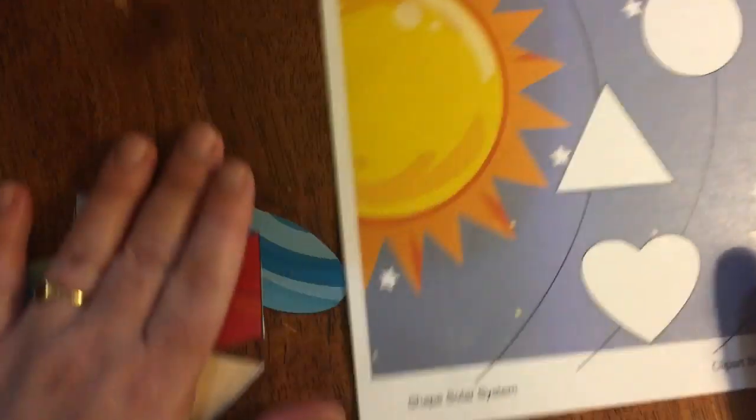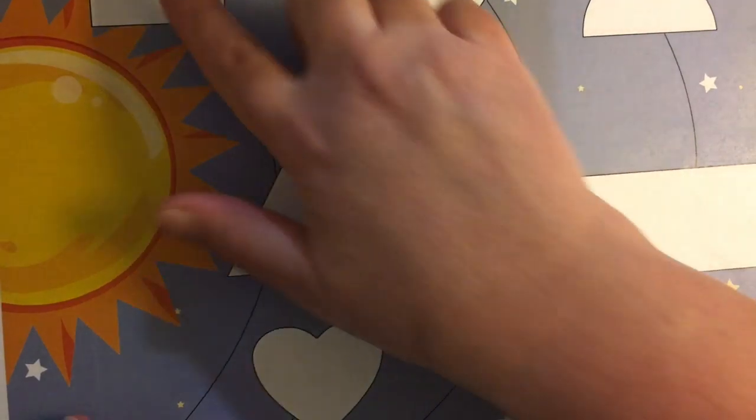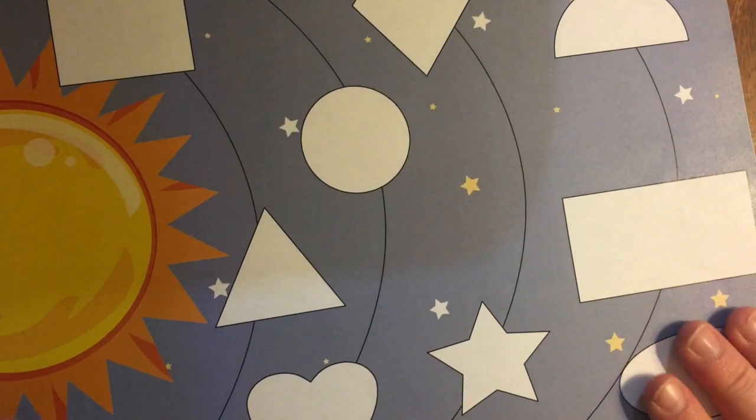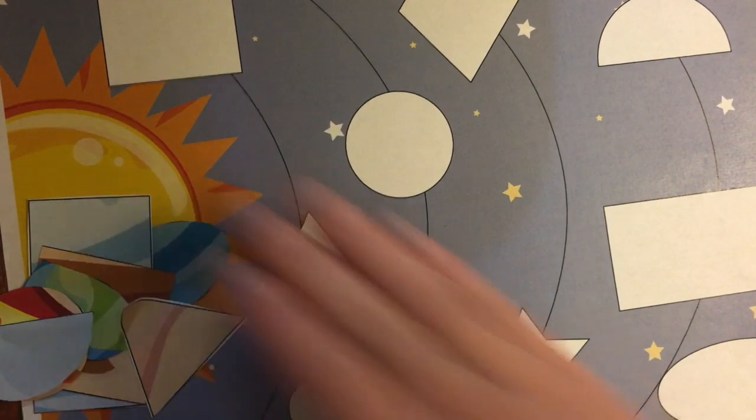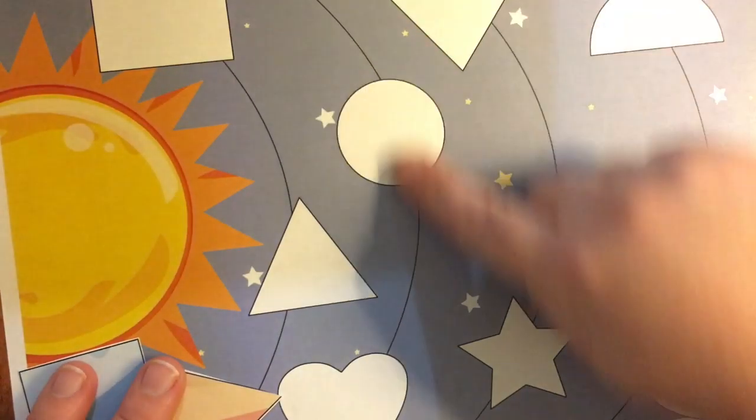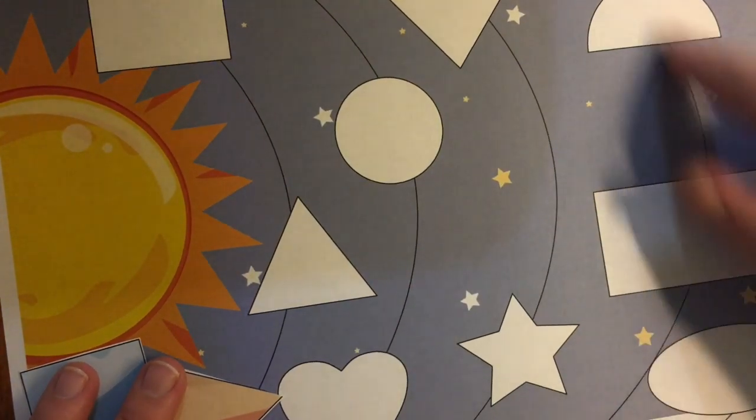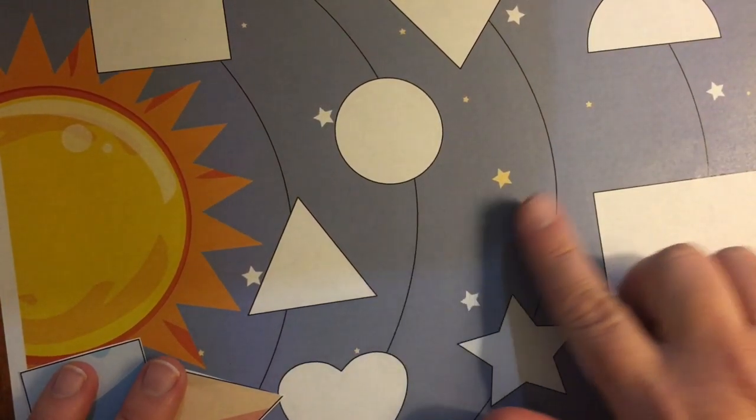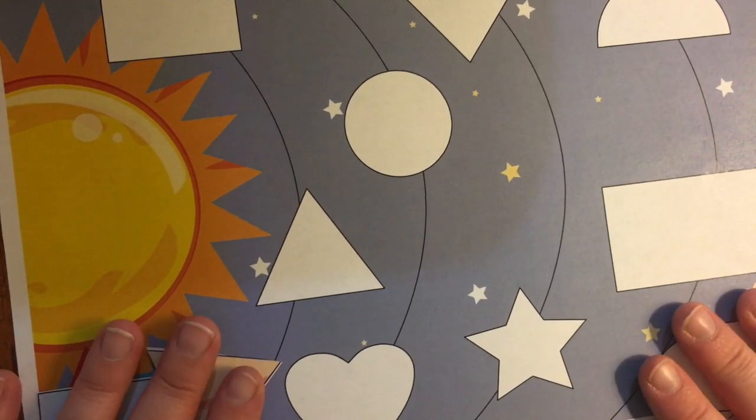Okay, now that I have all my pieces cut out, I'm going to match them to the shapes here. Look, there's our big sun. These lines are like part of our galaxy. They're showing us that things are further and further away from the sun. So let's see if we can find a match.